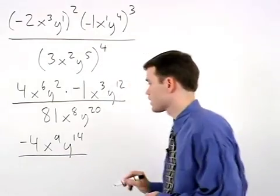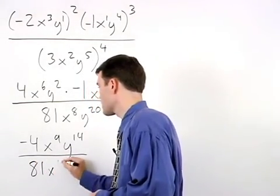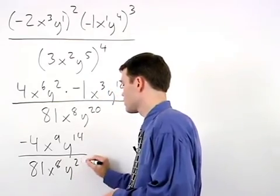So we have negative 4, x to the ninth, y to the fourteenth, over 81, x to the eighth, y to the twentieth.